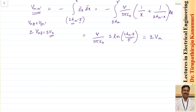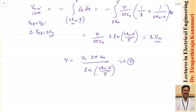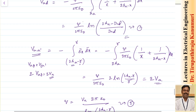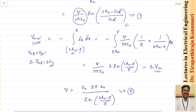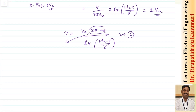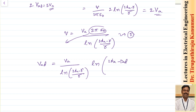From this I can calculate V_AA and derive that Q equals V_AA into 2π ε₀ divided by ln of (2H_A minus R) divided by R — let us take this as equation number 2. Substituting equation 2 into equation 1, Q by 2π ε₀ becomes V_AA by ln of (2H_A minus R). So V_AD equals V_A divided by ln of (2H_A minus R)/R, multiplied by ln of (2H_A minus D_AD)/D_AD. Let us take this as equation number 3.